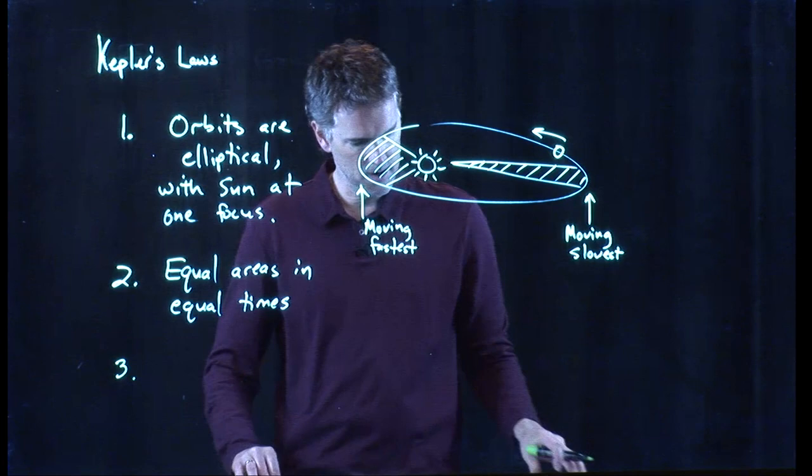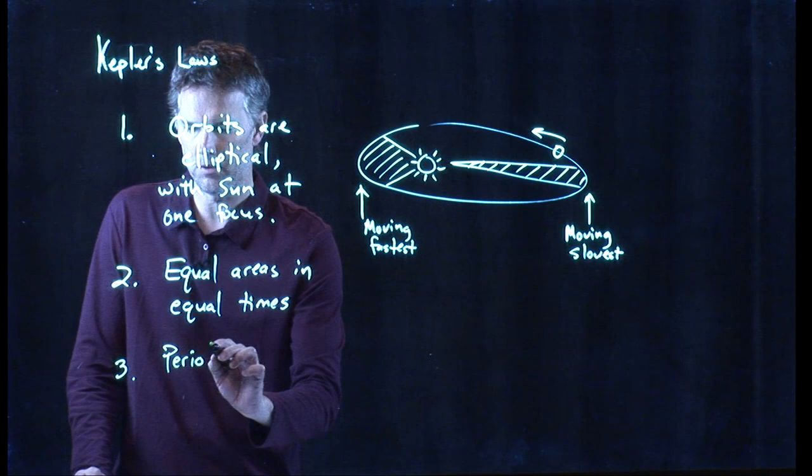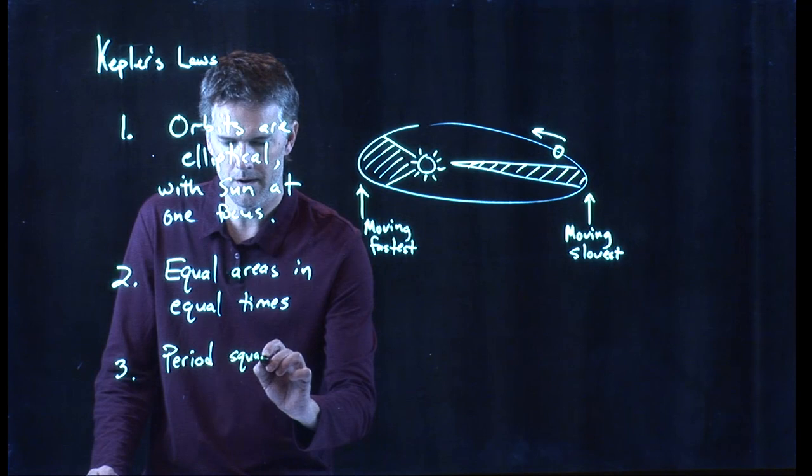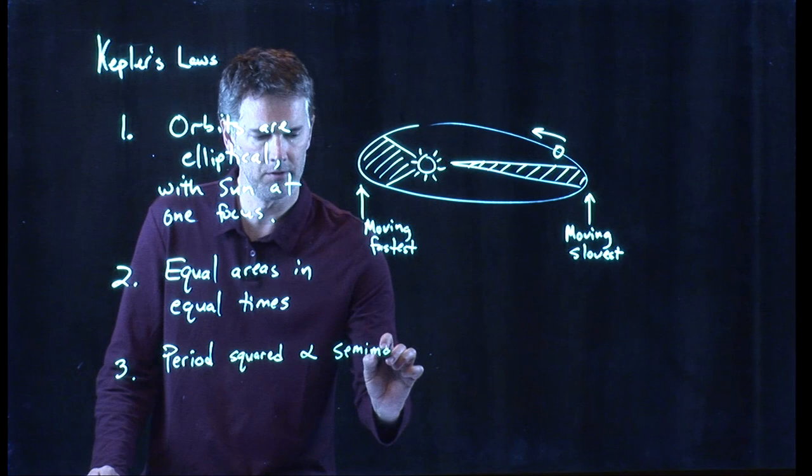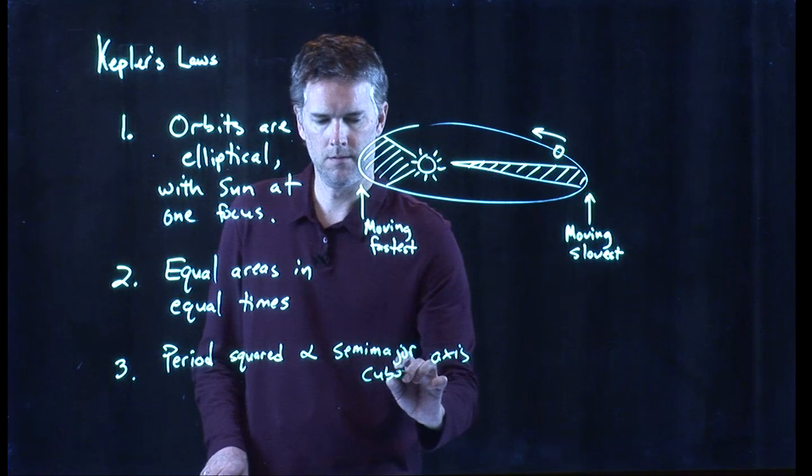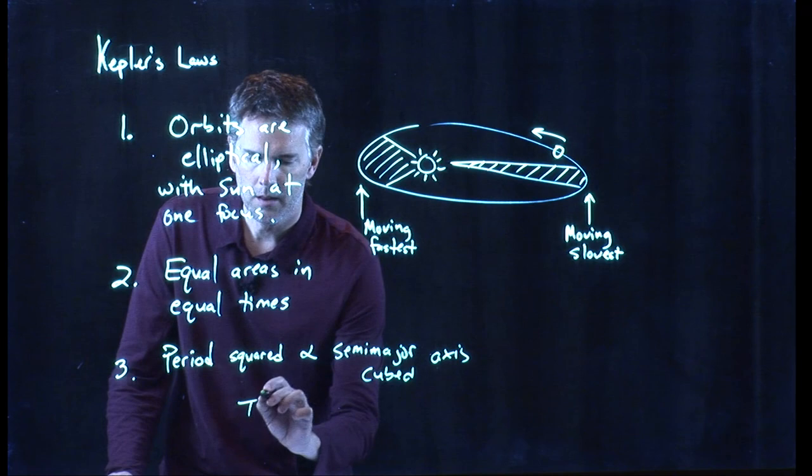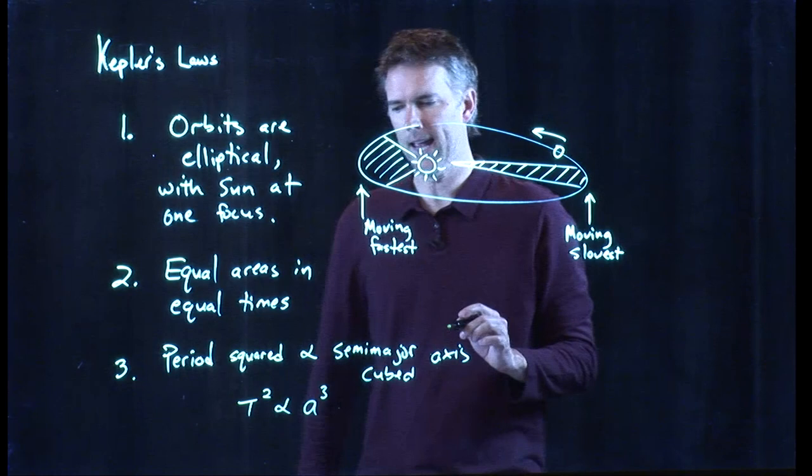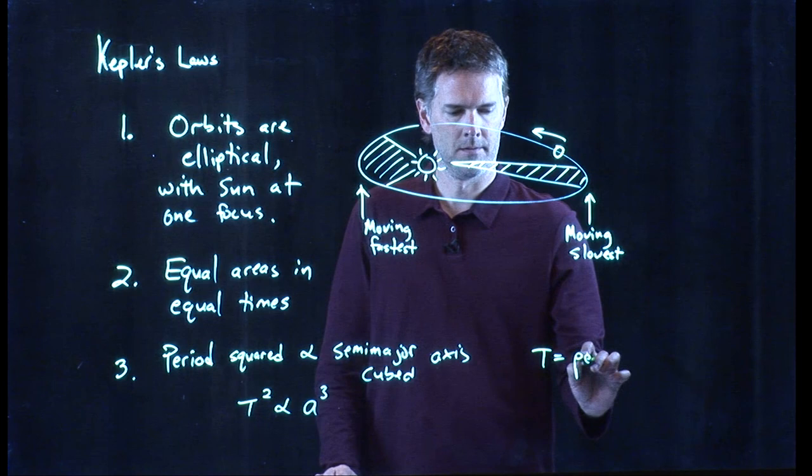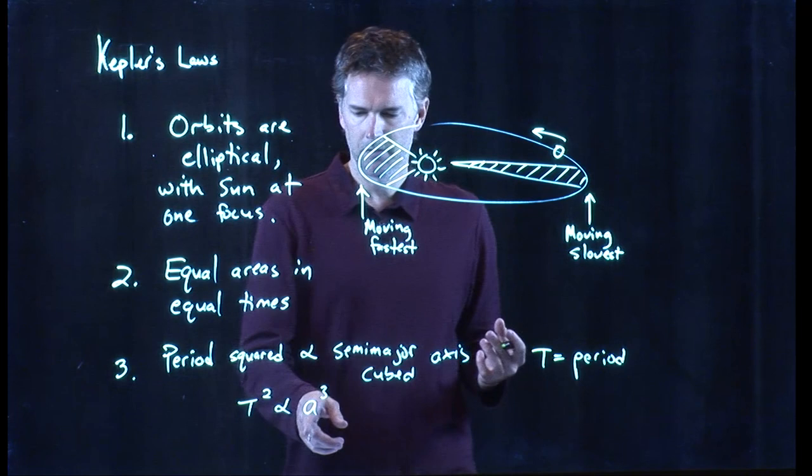The third law that Kepler came up with, which is a little bit more difficult to see, is the following. The period squared is proportional to the semi-major axis cubed. In words, that's what it is. In math, it looks like that. T squared is proportional to a cubed. T is the period. So for the Earth, the period would be one year. What is this semi-major axis cubed?